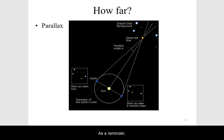As a reminder, parallax is the apparent movement of a nearby object compared to farther away objects due to the movement of the observer.